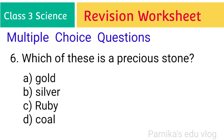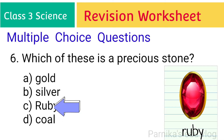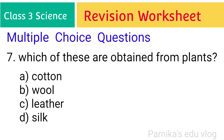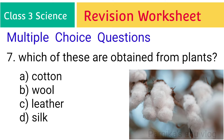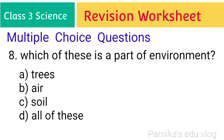Sixth one: which of these is a precious stone? The answer is ruby. Seventh question: which of these are obtained from plants? The answer is cotton. Eighth one: which of these is a part of the environment? The answer is all of these.